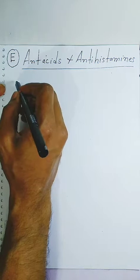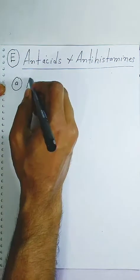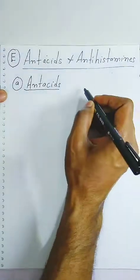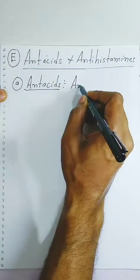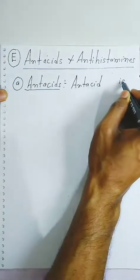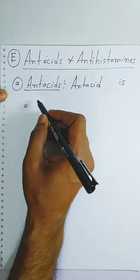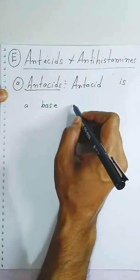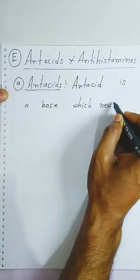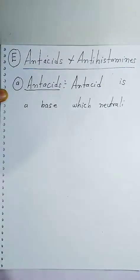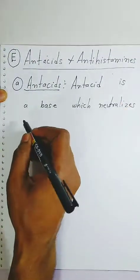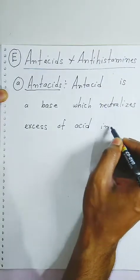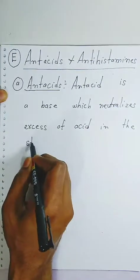What is the definition? In examinations, students are sometimes asked what is an anti-acid. Anti-acid is a base — because it is against the acid, the substance should be basic in nature. It neutralizes the excess acid which is present in our stomach. That is what we call an anti-acid.